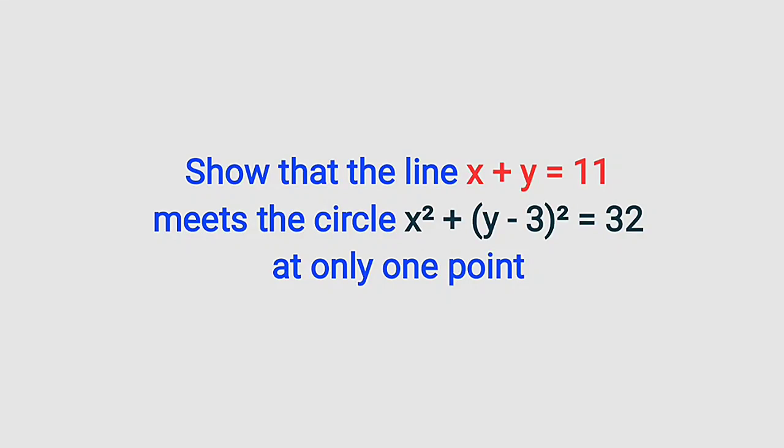Hello, good day viewers. Still on coordinate geometry, here is our problem for today. The question reads: show that the line x plus y equal to 11 meets the circle x squared plus y minus 3 whole squared equal to 32 at only one point.